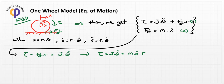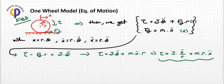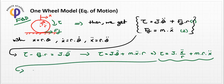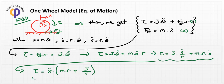Translating theta double-dot into x double-dot, we can write: torque equals J times x double-dot divided by R, plus M times R times x double-dot. This is the general equation given by the x state and the torque input variable. The final equation becomes: torque equals x double-dot times (M times R plus J divided by R).